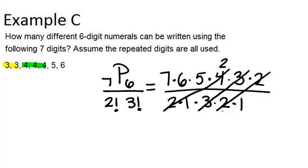You don't have to worry about the ones because 1 times 1 is just 1 and that's fine. So now all we actually have to do is multiply 7 times 6 times 5 times 2 to get our answer. And our answer is 420. So there are 420 different six-digit numerals that can be written using these digits if the repeated digits are all used.